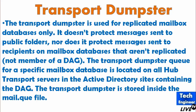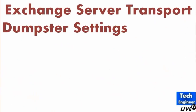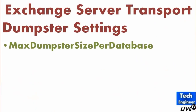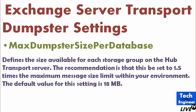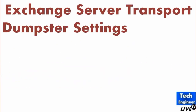It is a temporary arrangement — not a full backup. For transport dumpster settings you can configure the max dumpster size per database, which defines the size available for each storage group on the hub transport server. The recommendation is to set it to 1.5 times the maximum message size limit within your environment. The default value of this setting is 18 MB.